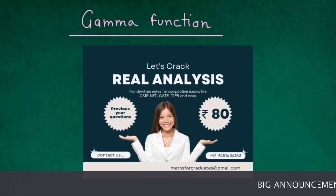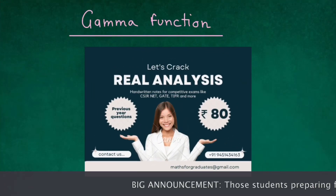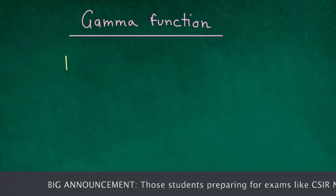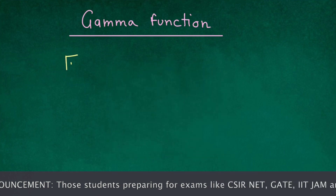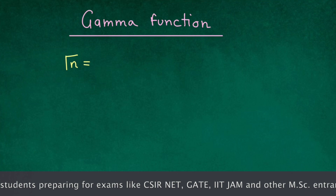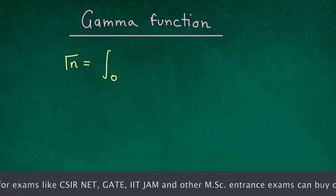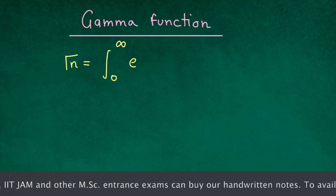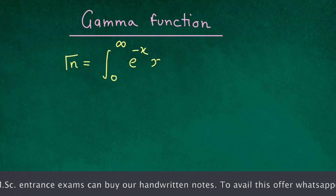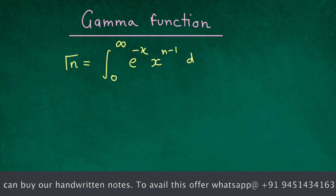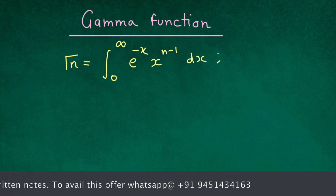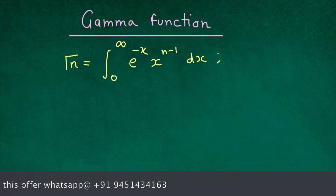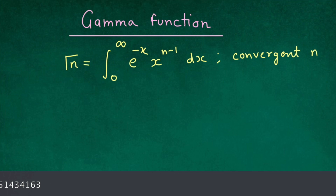Welcome to the Chen Maslow graduates. Today we will see the gamma function. The gamma function is defined as gamma n, and this equals to the integral from 0 to infinity of e raised to the power minus x, into x raised to the power n minus 1, dx. This integral is convergent when n is positive.